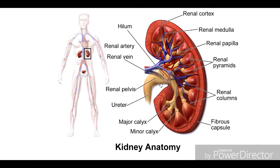Organisms that excrete urea as their main nitrogenous waste are called ureotelic organisms. Next is uric acid. Uric acid is an excretable substance, and organisms that excrete uric acid are called uricotelic.